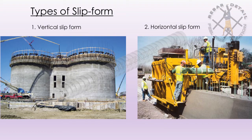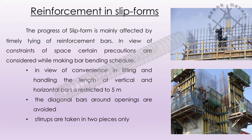Types of slip forms are vertical slip form and horizontal slip form. Regarding reinforcement in slip forms, the progress of slip form is mainly affected by timely tying of reinforcement bars.